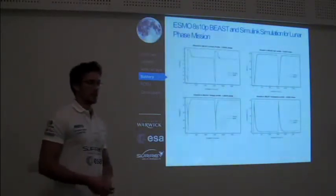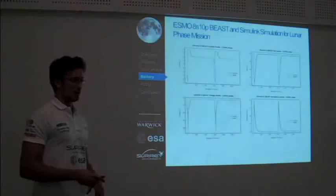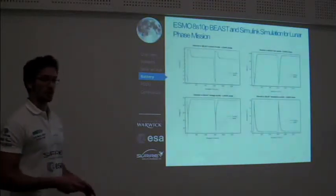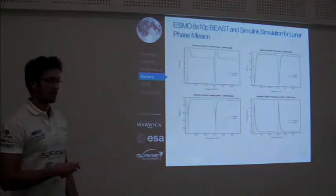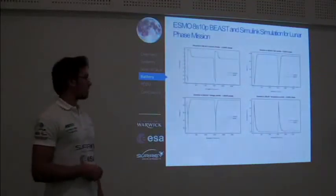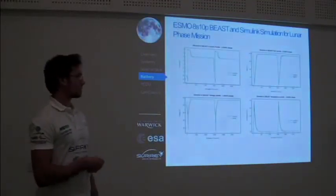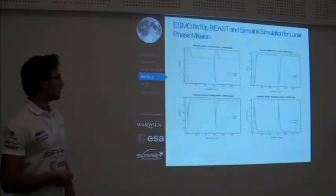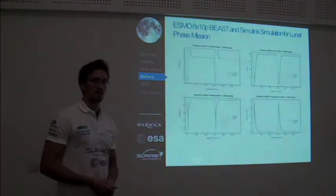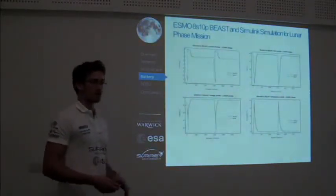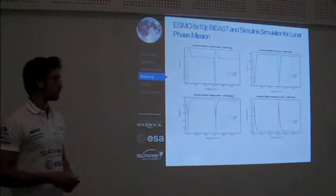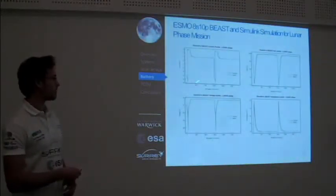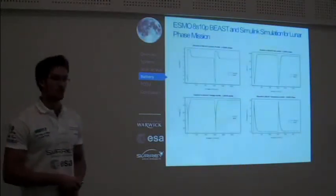Noting that the minimum and maximum voltage and current are 20 volts and 15 amps, you can see that at the beginning of life the battery will reach these limits. Therefore, for the final phase of the mission, if capacity fading and string failure are accounted for, the battery will not provide the power for this phase, so the power budget needs to be revised.